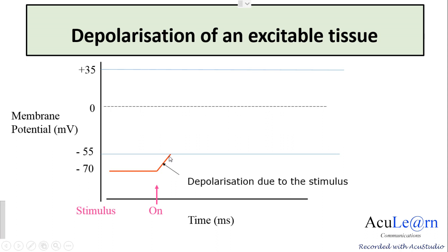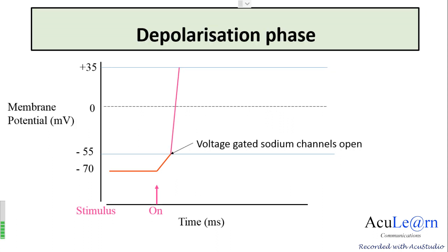At minus 55 millivolts, which is the firing level or threshold potential, the voltage-gated sodium channels open. When the voltage-gated sodium channels open, there is a rapid influx of sodium ions — sodium moves inside the neuron — and the membrane potential reaches zero and then overshoots up to plus 35 millivolts. This change in membrane potential from minus 55 to zero and then to plus 35 millivolts is the depolarization phase. The ion responsible for depolarization is the influx of sodium through the voltage-gated sodium channels.